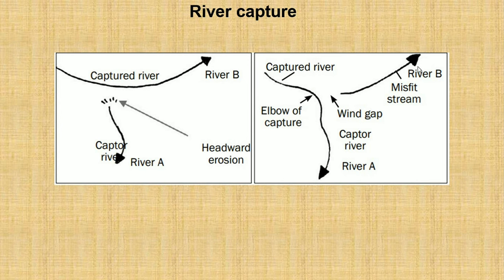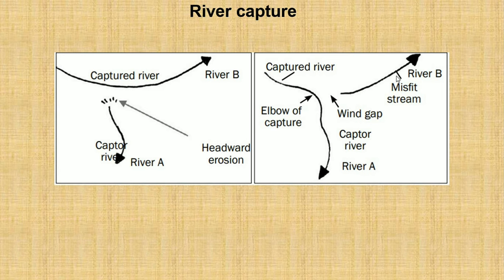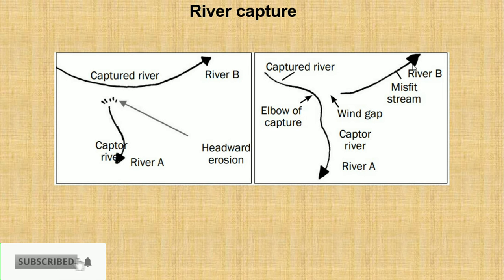When river capture has happened, we call River B a misfit stream. Over time, this stream will flow in a wide river valley with very minimal water flowing inside.